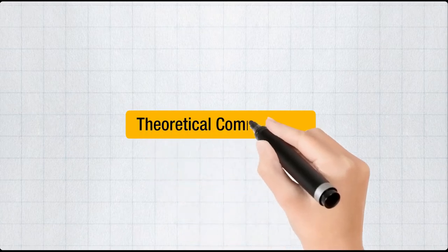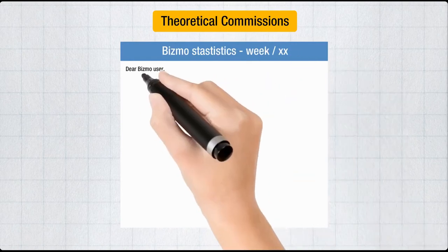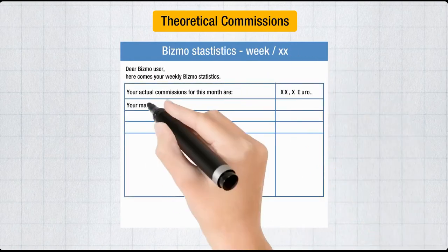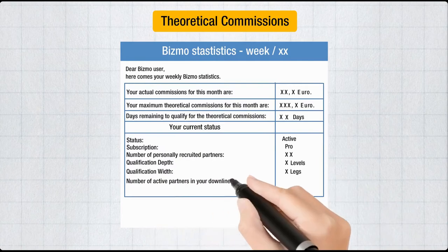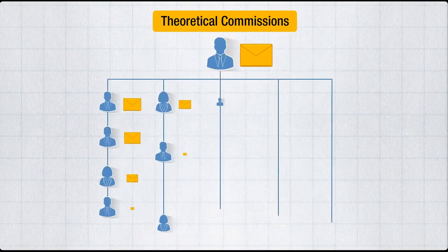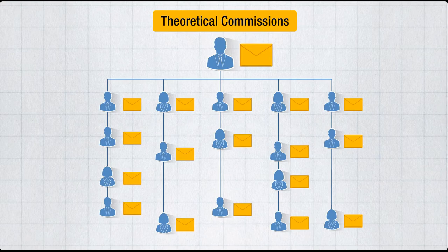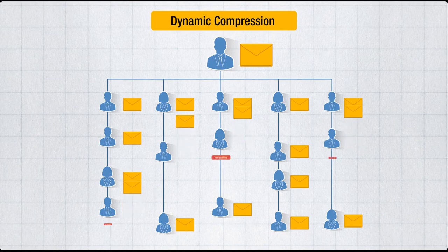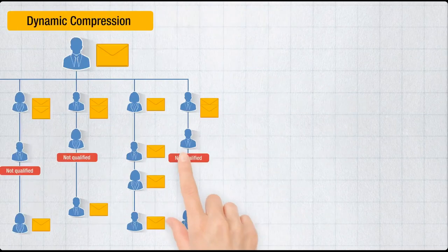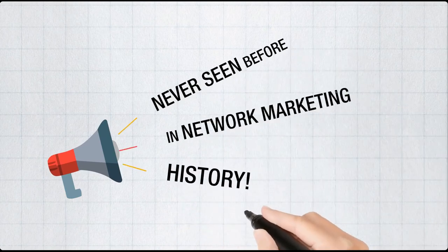And the next big thing is theoretical commissions. Bismo calculates the turnover in your downline every week and tells you what you would earn if you refer more people or upgrade your subscription. Then Bismo sends you and all of your downline this information, giving you time till the end of the month to fulfill the duties and claim the money for yourself. Because otherwise, dynamic compression will pay the money to qualified upliners. This setting generates a momentum never seen before in network marketing history.